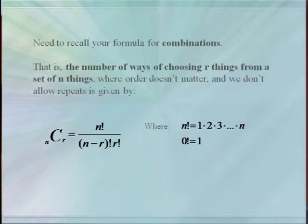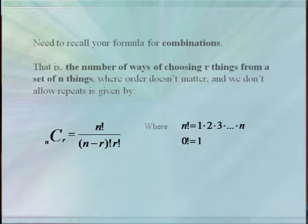We can consider a more difficult problem, but first you need to remember your formula for choosing r items from a set of n items. Our combination formula says that n choose r is given by n! divided by (n-r)!r!.